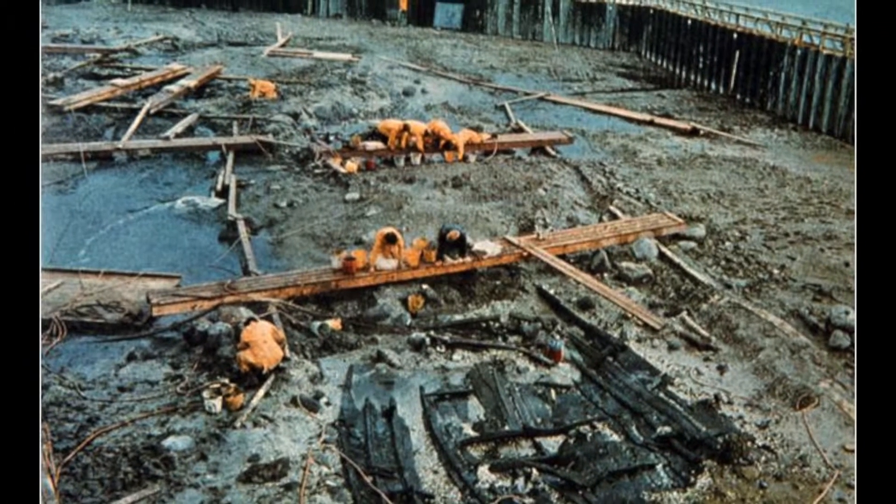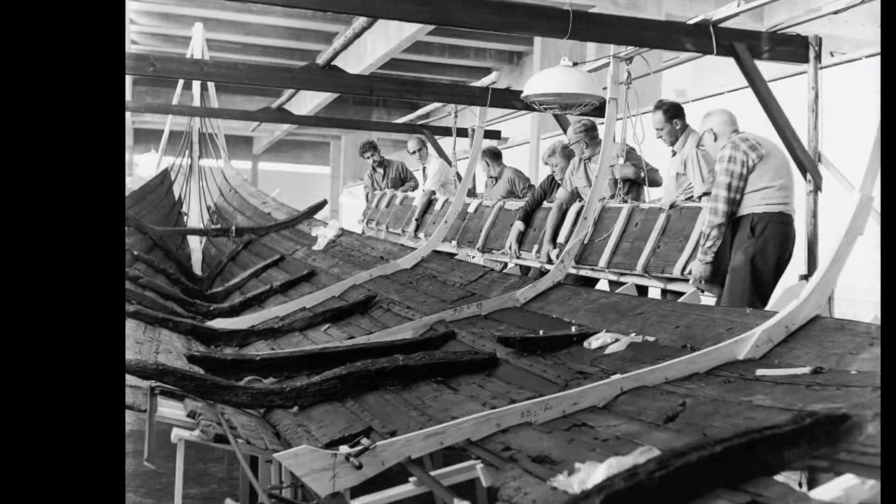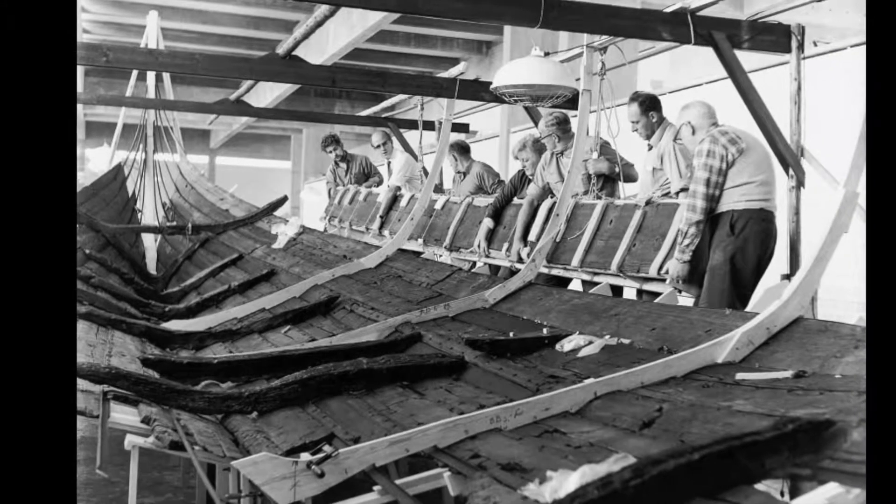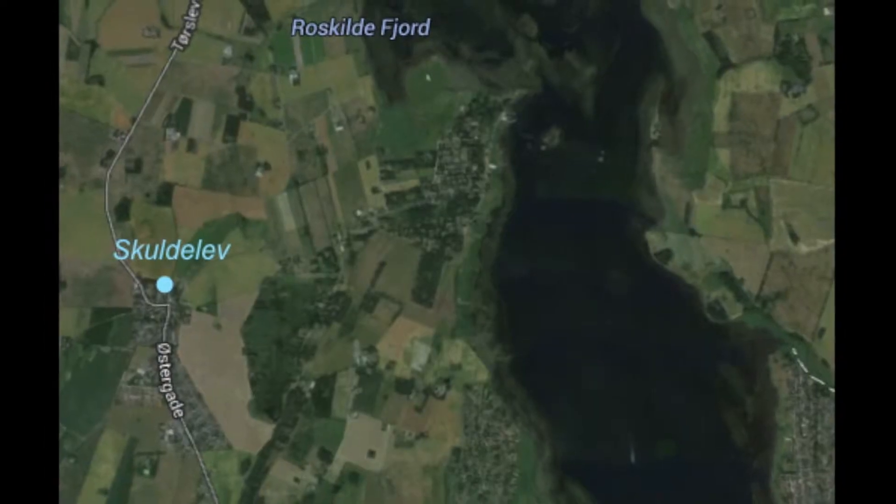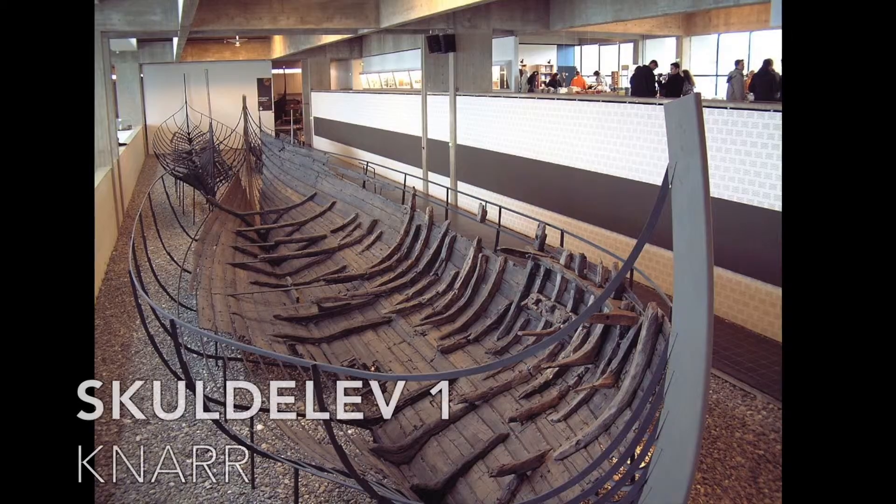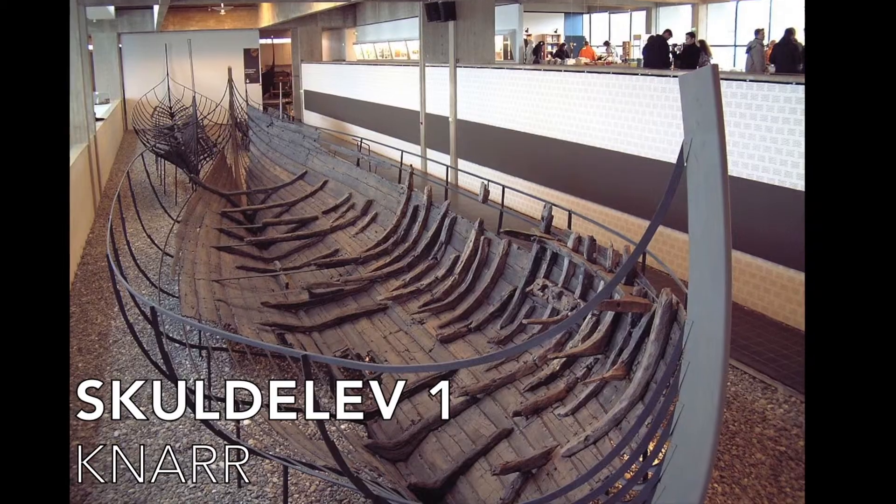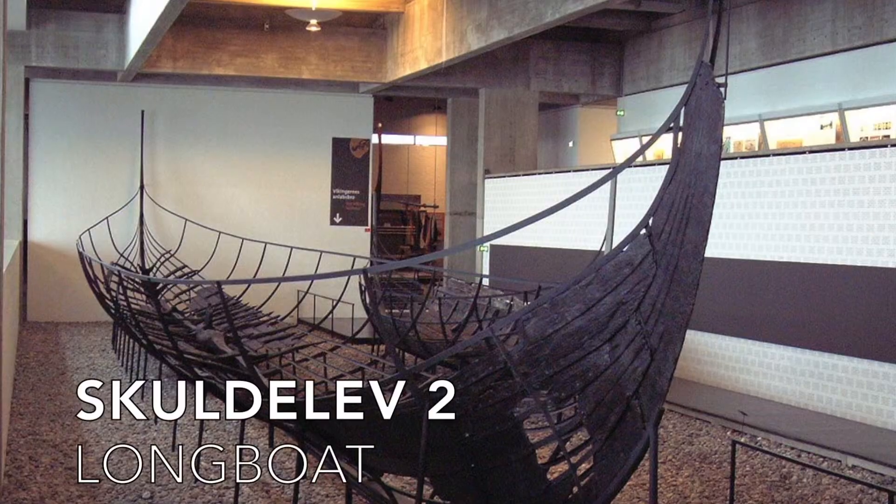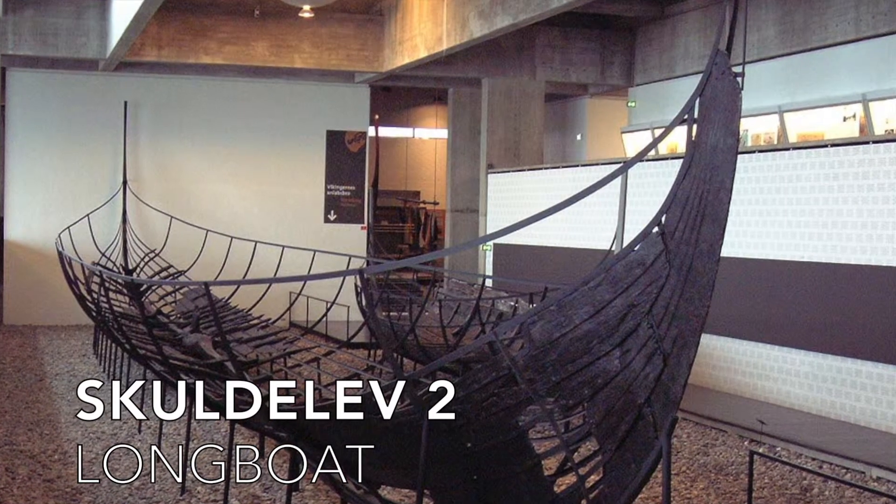In the early 1960s, five Viking ships were excavated from the Roskilde Fjord in Denmark. These boats were dubbed the Skuldelev ships after the town near which they were found. We decided to use Skuldelev I as the model for our knarr, and Skuldelev II as the model for our longboat.